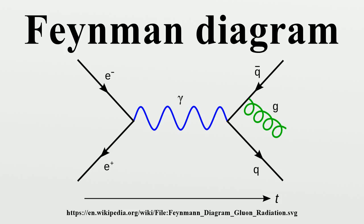Feynman diagrams are often confused with space-time diagrams and bubble chamber images because they all describe particle scattering. Feynman diagrams are graphs that represent the trajectories of particles in intermediate stages of a scattering process. Unlike a bubble chamber picture, only the sum of all the Feynman diagrams represents any given particle interaction. Particles do not choose a particular diagram each time they interact. The law of summation is in accord with the principle of superposition. Every diagram contributes to the total amplitude for the process.